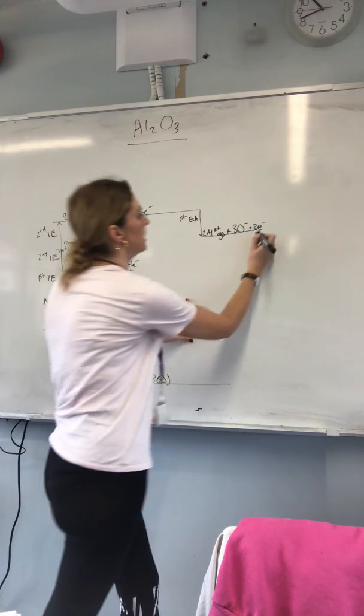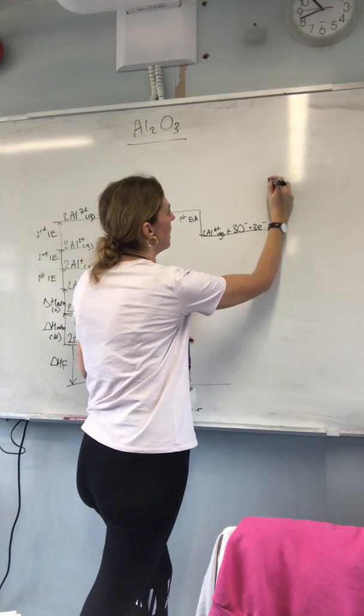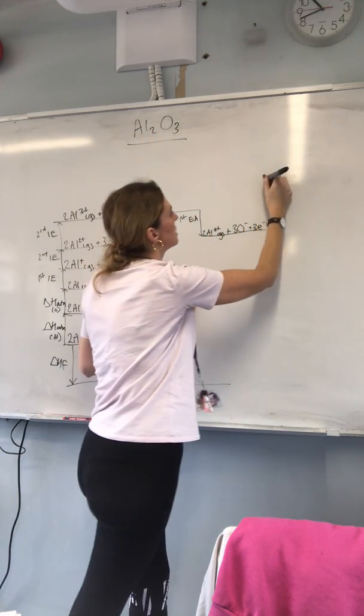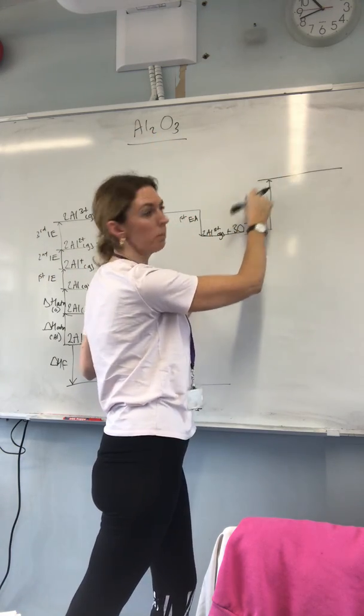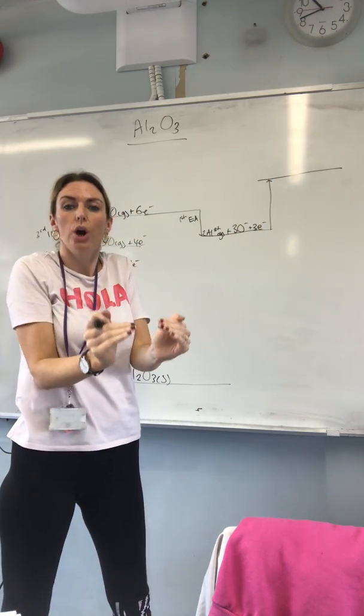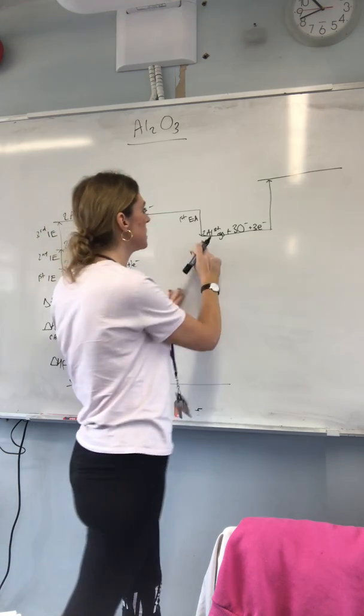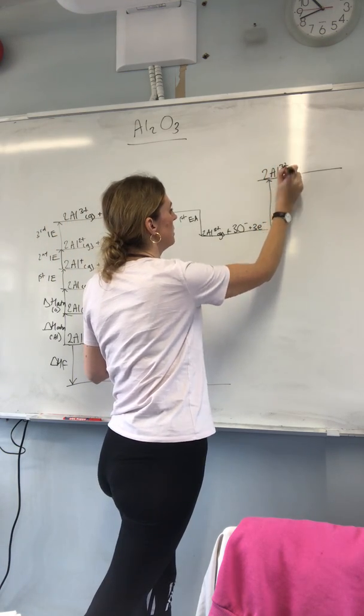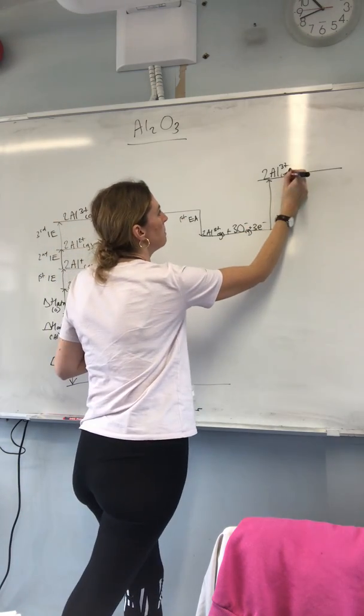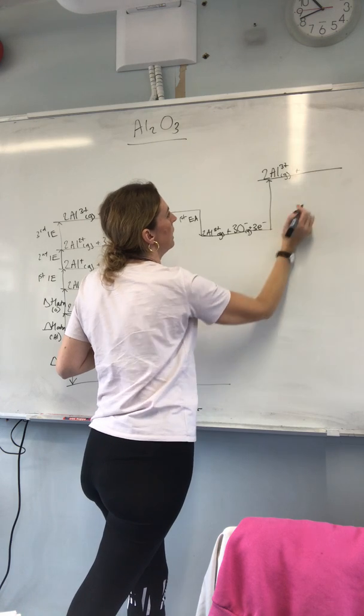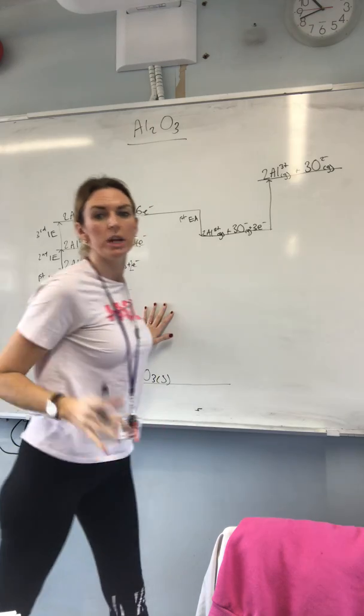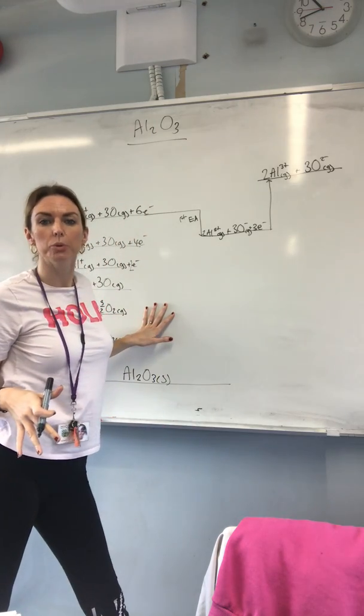However, second electron affinity, by which we form the two minus ions, that is an endothermic process. So we're going to come back up. I'm going to draw another line here. My arrow points up - it's going to be higher. It's an endothermic process. We need to put energy in to overcome those repulsive forces. So I've now got 2 Al3+ gas plus 3 O2- gas, and no electrons feature here because we've used them all in the formation of our ions.